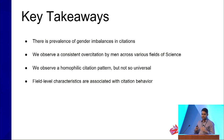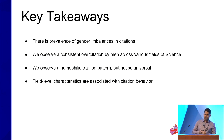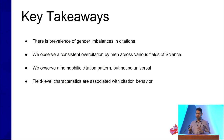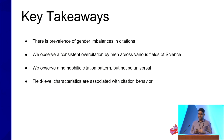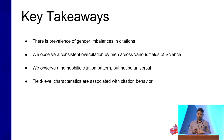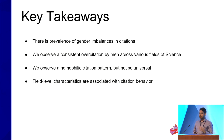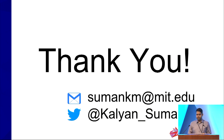To conclude, we see a prevalence of gender imbalances in citations. We observe consistent over-citation by men across a variety of fields of science. We also observe a homophilic citation pattern, but it's not universal — over-citation is present on the men's side but not always on the women's side. There are field-level characteristics strongly associated with citation behaviors. Thank you, and I'd be happy to take any questions.